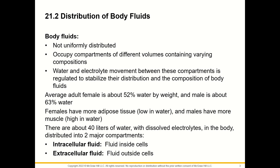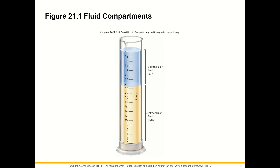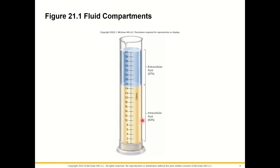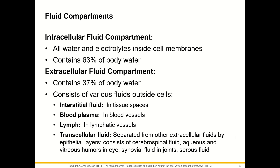The intracellular fluid is the fluid found inside cells, and the extracellular fluid is the fluid found outside cells. The intracellular fluid takes up about 63%, and the extracellular fluid takes up about 37%. I like to remember it as a two-thirds intracellular to one-third extracellular ratio. The extracellular fluid compartment consists of interstitial fluid, blood plasma, lymph, and transcellular fluid.